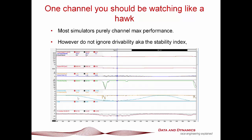That being said, there is one channel you need to be watching like a hawk, and that is the stability index, because it tells you about drivability. As I commented in one of my other videos, all race car engineering revolves around two things — grip and drivability. This particular example of a front wing change on a Formula 3 car really illustrates what you get from simulation. If you take a look at the steering trace here, the baseline is coloured and the front wing change forward is in black — there's not a lot of change in the steering, but it's really shown up in the stability index: about a 3% change further forward. So when you start making all these changes, don't just watch the lap time getting quicker and quicker — look at what's happening with the stability index.